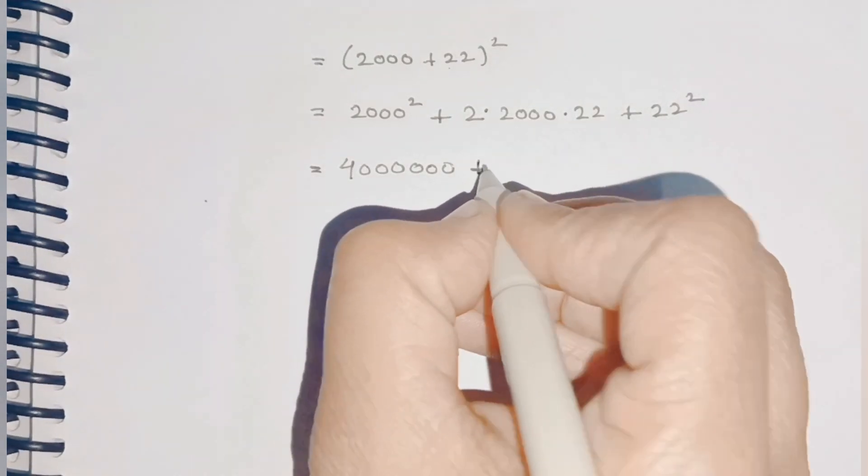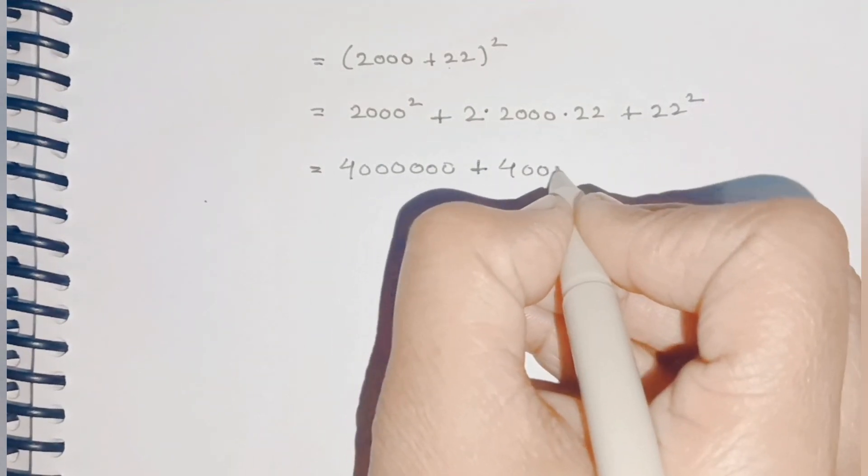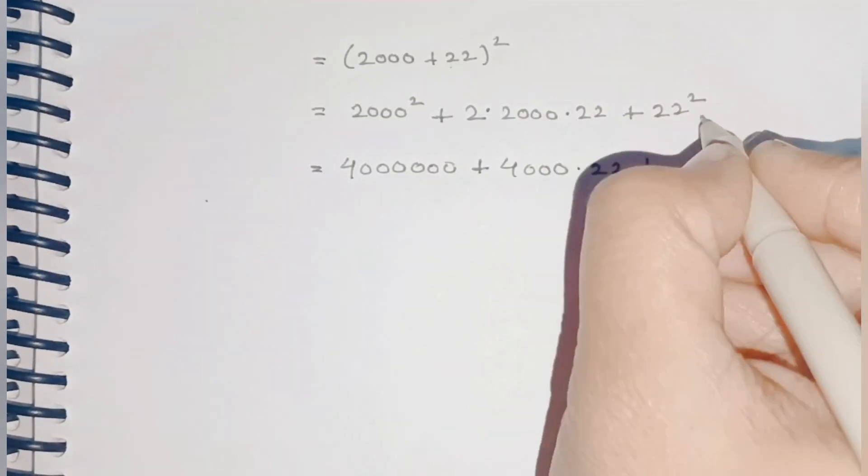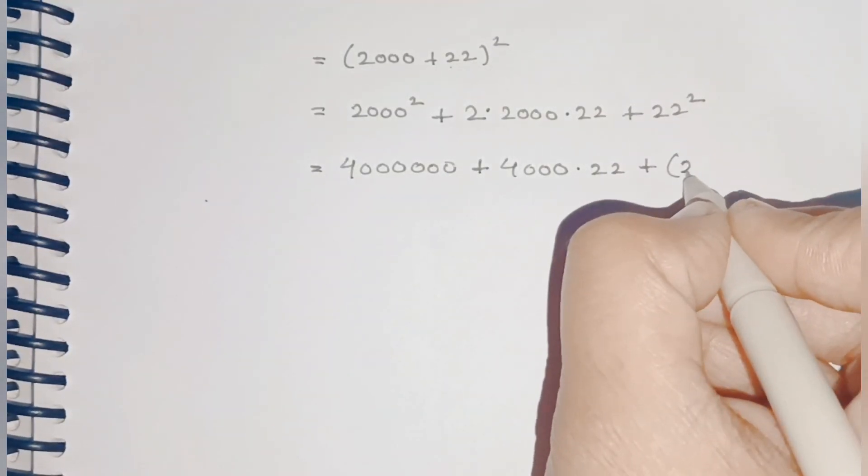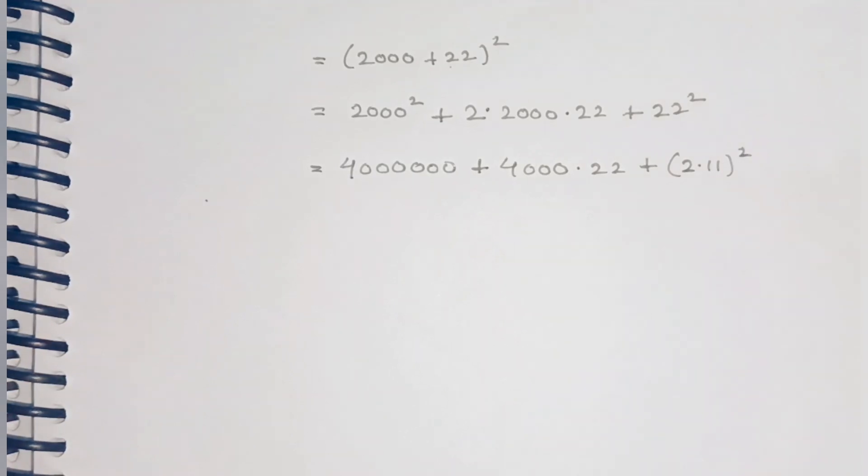Plus 2 × 2000 × 22 = 4000 × 22. Plus 22² can be written as (2 × 11)².